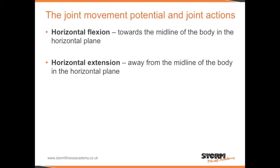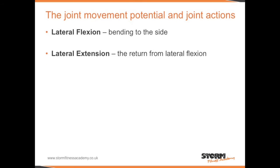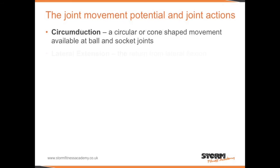Horizontal flexion is movement towards the midline of the body in the horizontal plane. Horizontal extension is movement away from the midline of the body in the horizontal plane. Lateral flexion is bending to the side. Lateral extension is the return from lateral flexion.